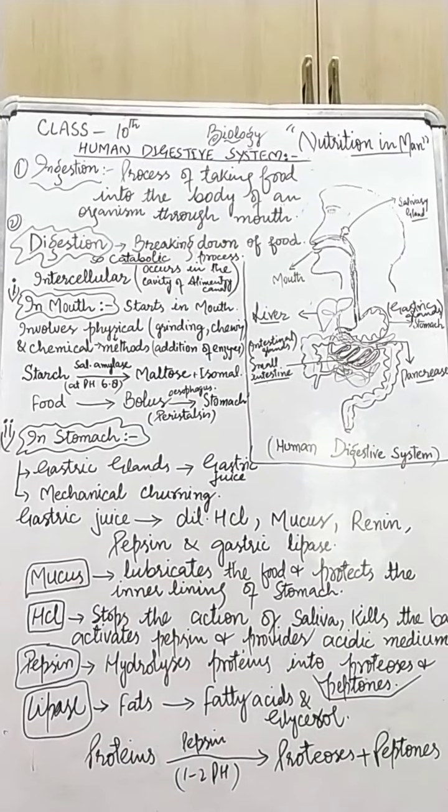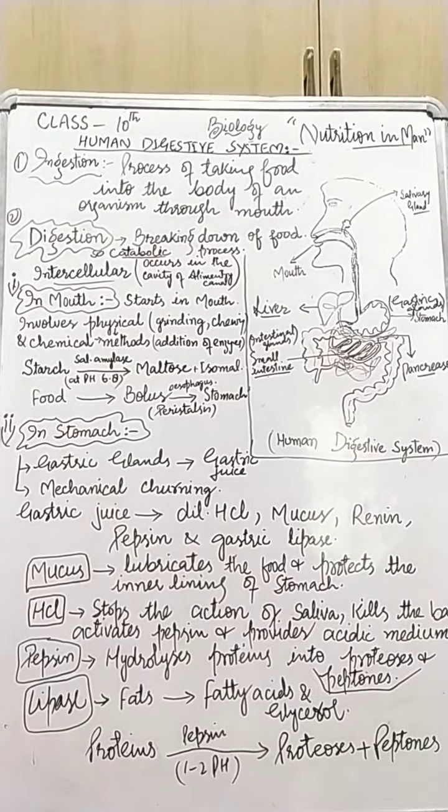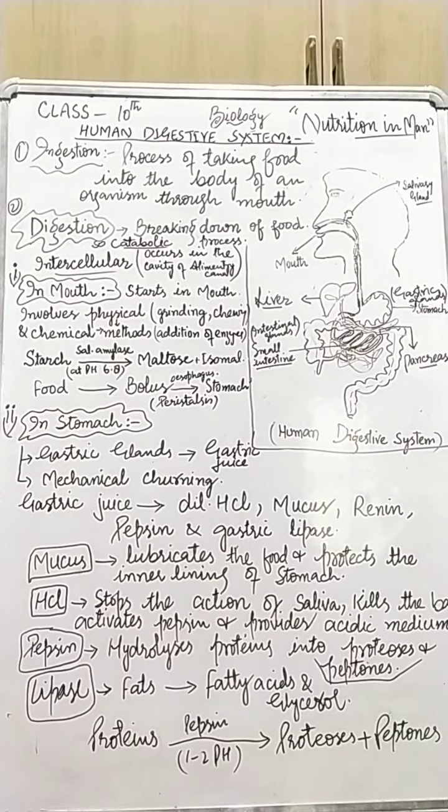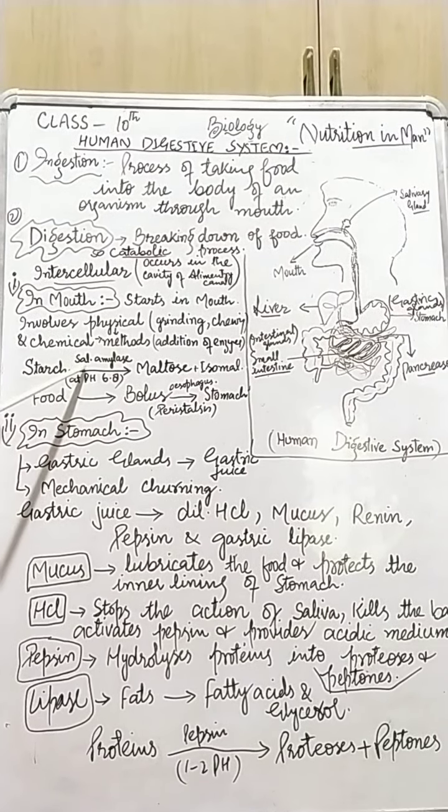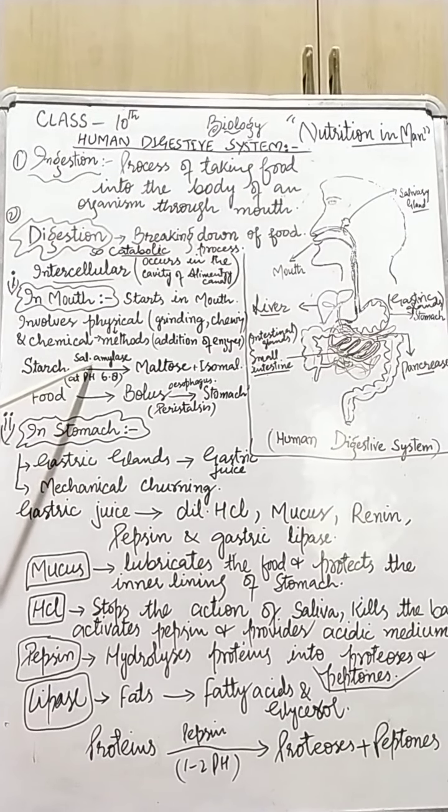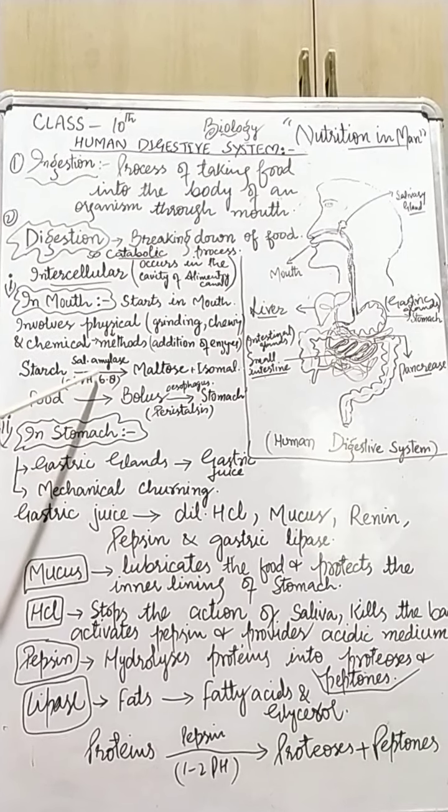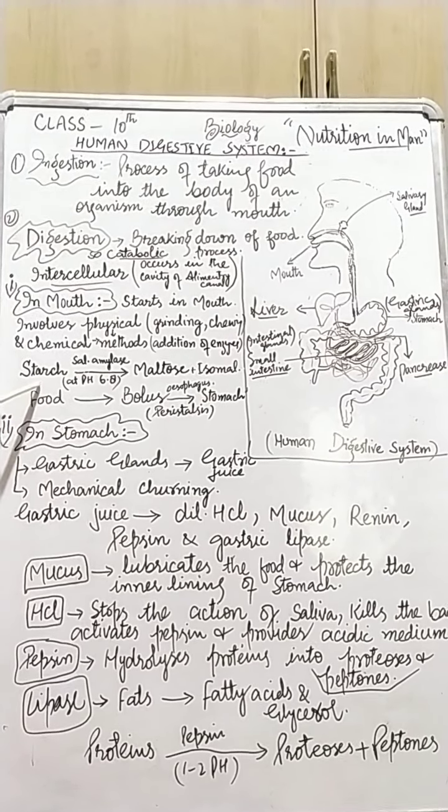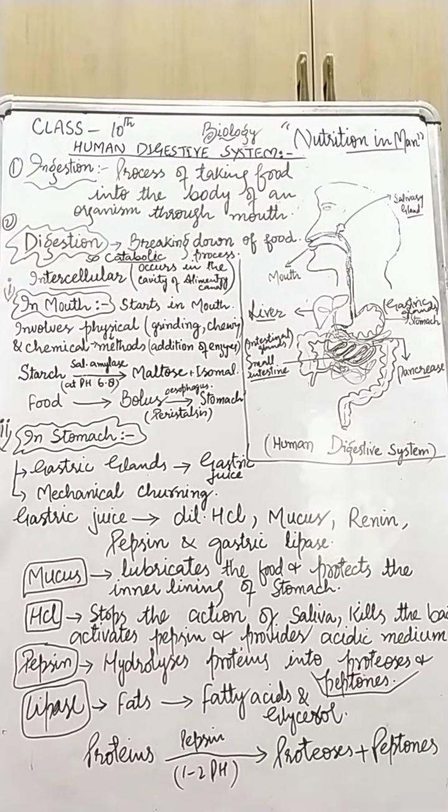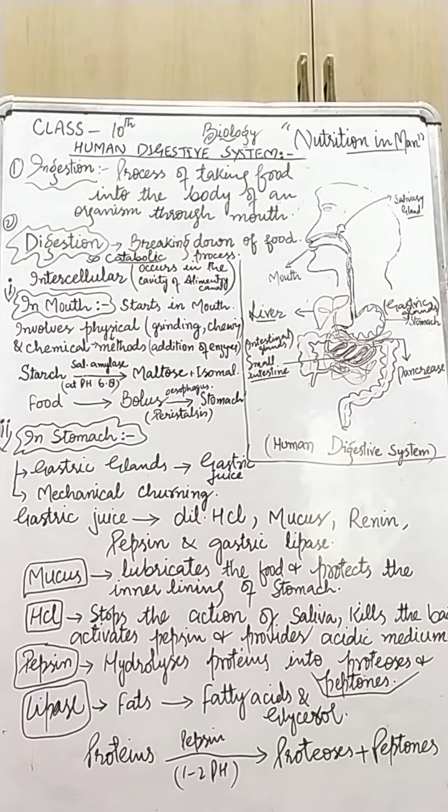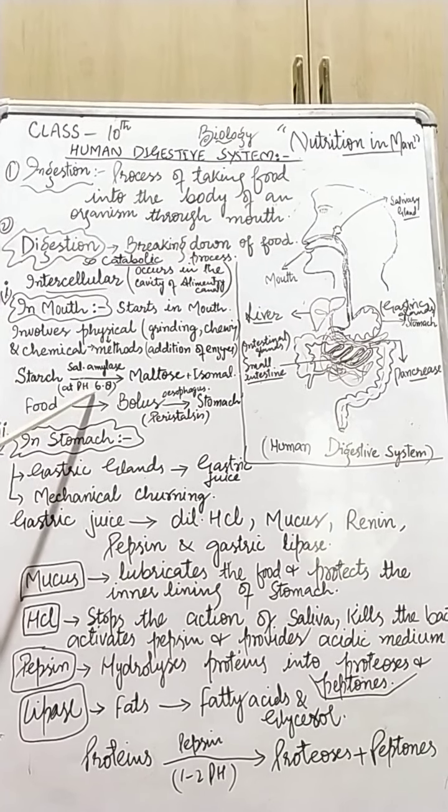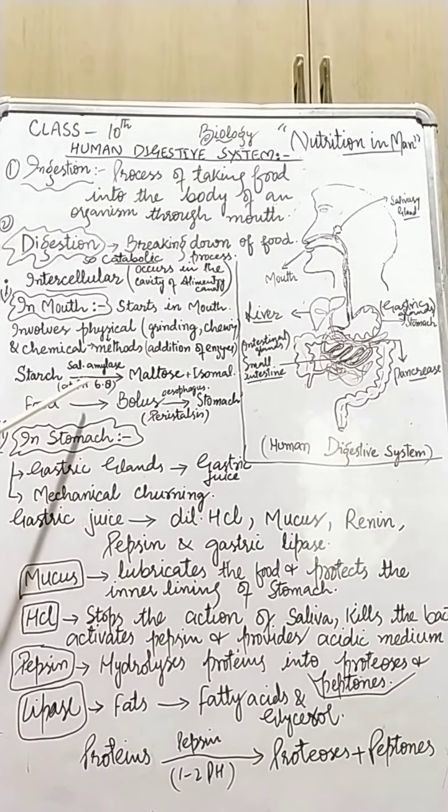The enzyme salivary amylase, which was also called as ptyalin previously, acts on starch which is present in the food and breaks it into maltose and isomaltose which is a disaccharide, and the medium here is pH 6.8, that medium is alkaline or neutral.